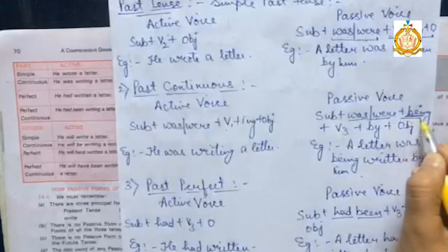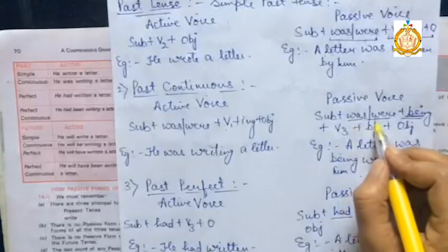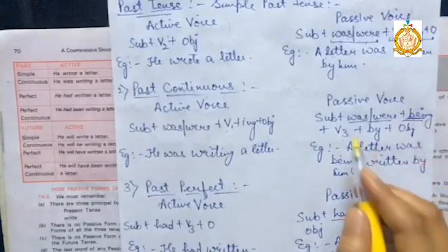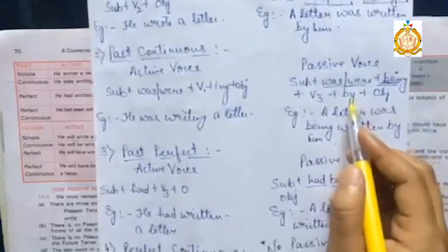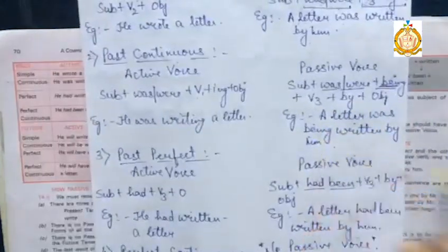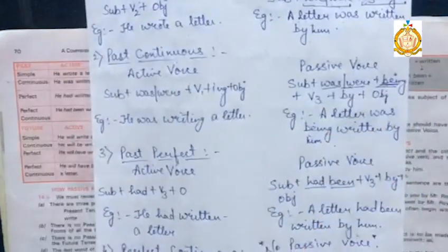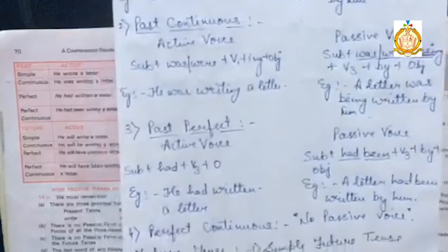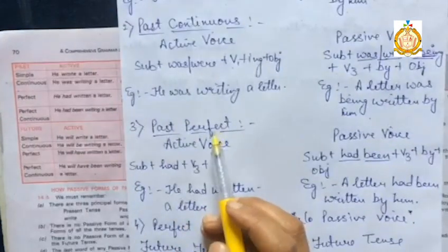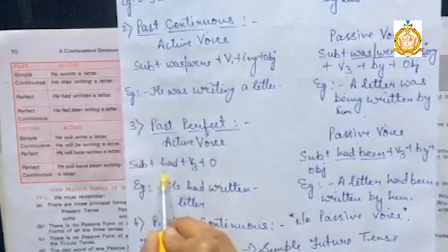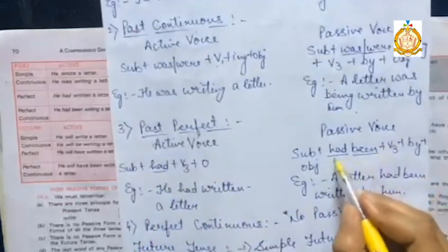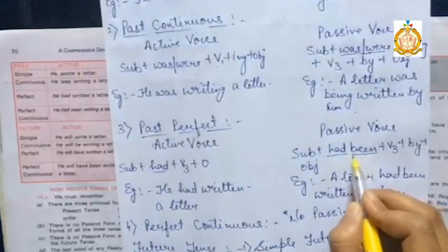Next comes past continuous tense. The change will be: was/were + being + verb's third form + by + object. So the example is: 'A letter was being written by him.' For past perfect tense, we know that 'had' is used, so the formation will be: had + been + verb's third form + by + object. Also, past perfect continuous tense doesn't have any passive voice form.